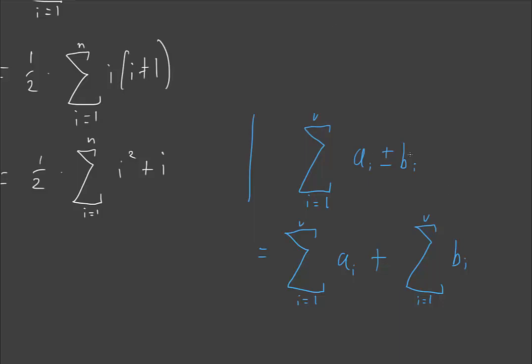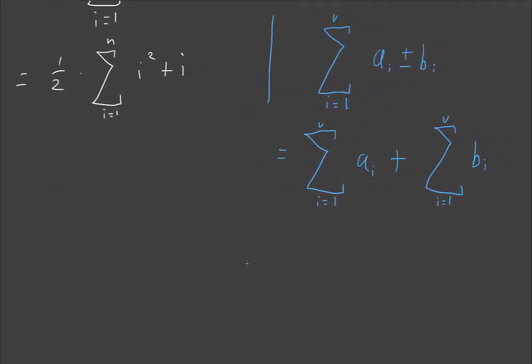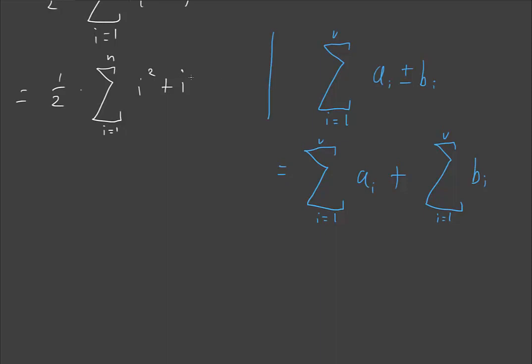Basically we can split these two terms that both depend on i, which is exactly what we've got here. We've got term one which totally depends on i, it's i squared, and term two which totally depends on i because it's i. So what we can do is split them into two separate things. This now gives us one half times the sum i equals 1 to n of i squared plus sum i equals 1 to n of i.